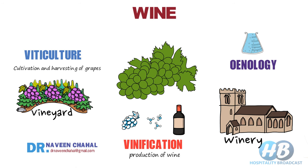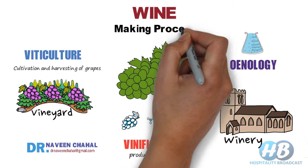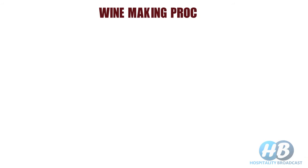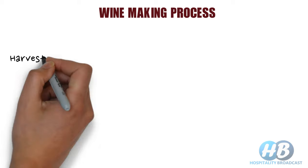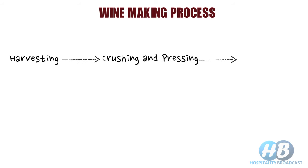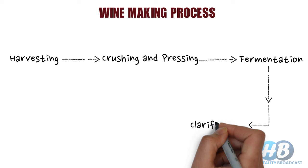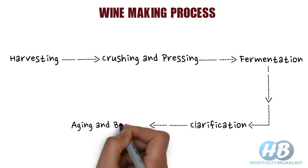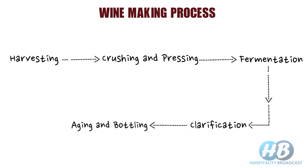In this video, I will explain the basic steps followed in winemaking. In common, there are five steps in the winemaking process: harvesting, crushing and pressing, fermentation, clarification, and aging and bottling. There are numerous deviations and variations which can be done during the winemaking process to produce different types of wines, but the basic steps remain the same.